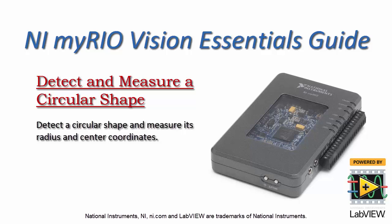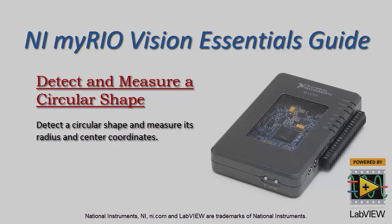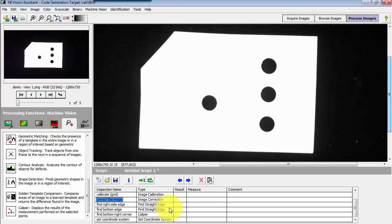Now I'd like to show you how you can detect a circular shape within a region of interest and measure its radius and center coordinates.